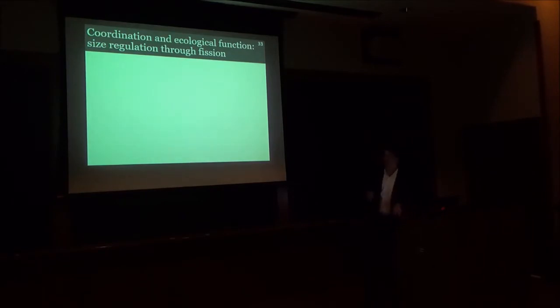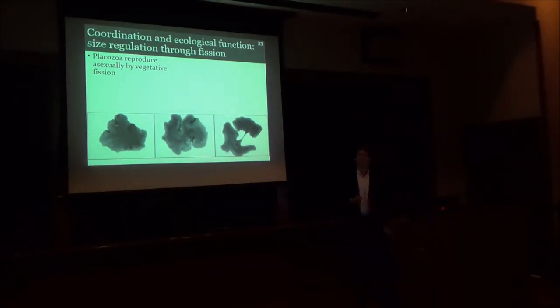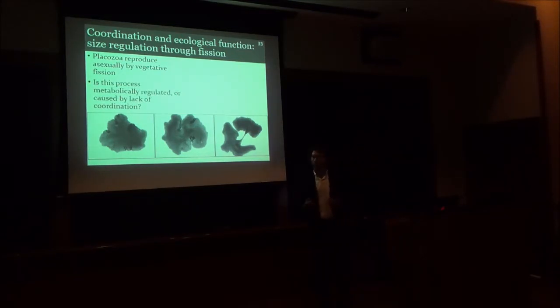That's all well and good for coordination, but now I want to relate this to ecological function in Placozoa. And one particularly important ecological function is reproduction. In Placozoa, reproduction occurs through asexual fission. You have one animal that elongates and constricts itself and then divides into two different animals through this vegetative fission process. Ever since I first learned about this process, I was curious, what is driving this process mechanistically? Is it that these animals fission because of some developmental regulation, may be triggered by metabolism? Or could this actually be an emergent phenomenon of a lack of coordination at larger sizes?